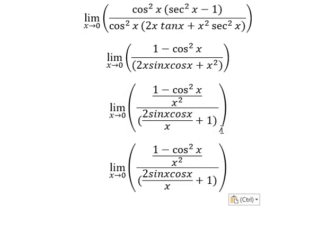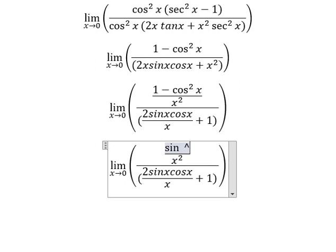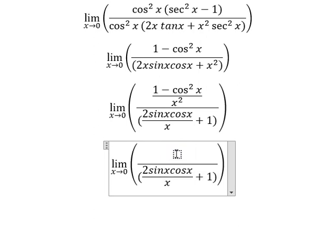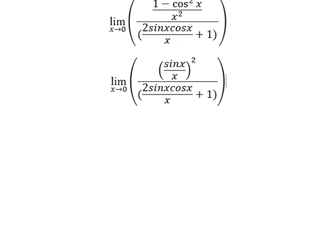Next, one minus cosine x square we change to sine x square, and this one we can write as sine x over x, everything to the power of two. So we have the formula in here.